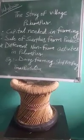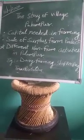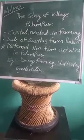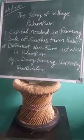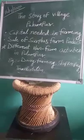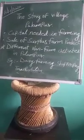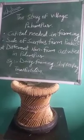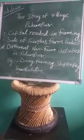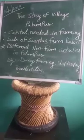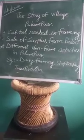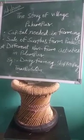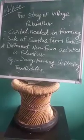The first point is capital needed in farming. Modern farming methods require a great deal of capital, so the farmer needs more money. Small farmers have to borrow money to arrange the capital. They borrow from large farmers, village money lenders, or traders who supply various inputs for cultivation. The rate of such loans is very high, so they are put into great distress to repay the loan.